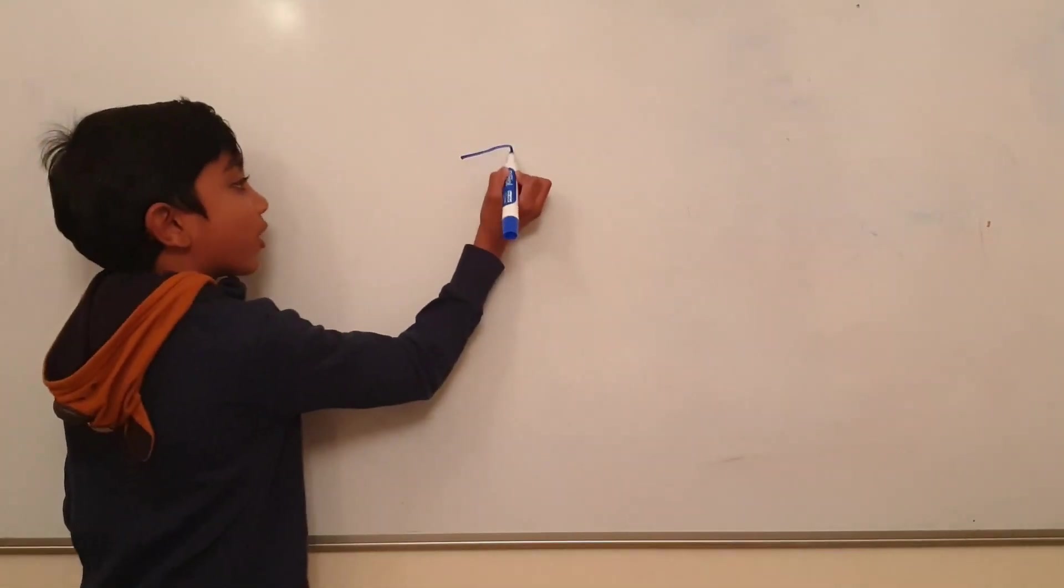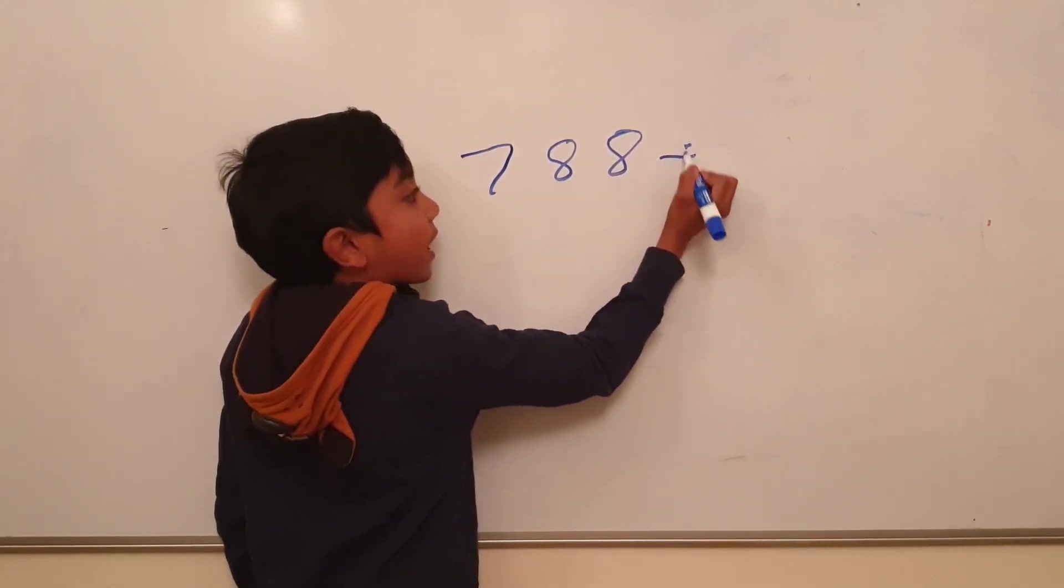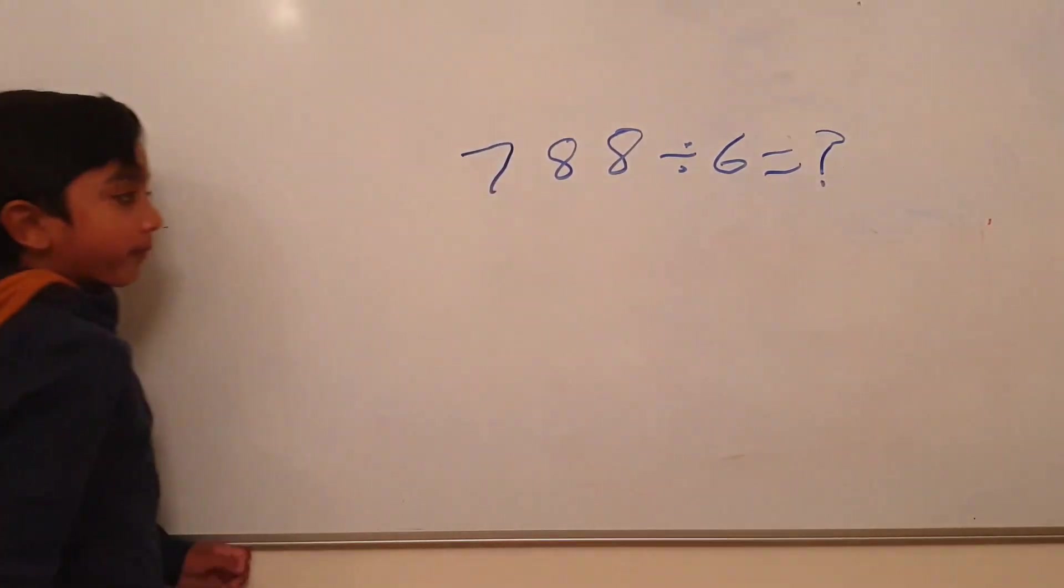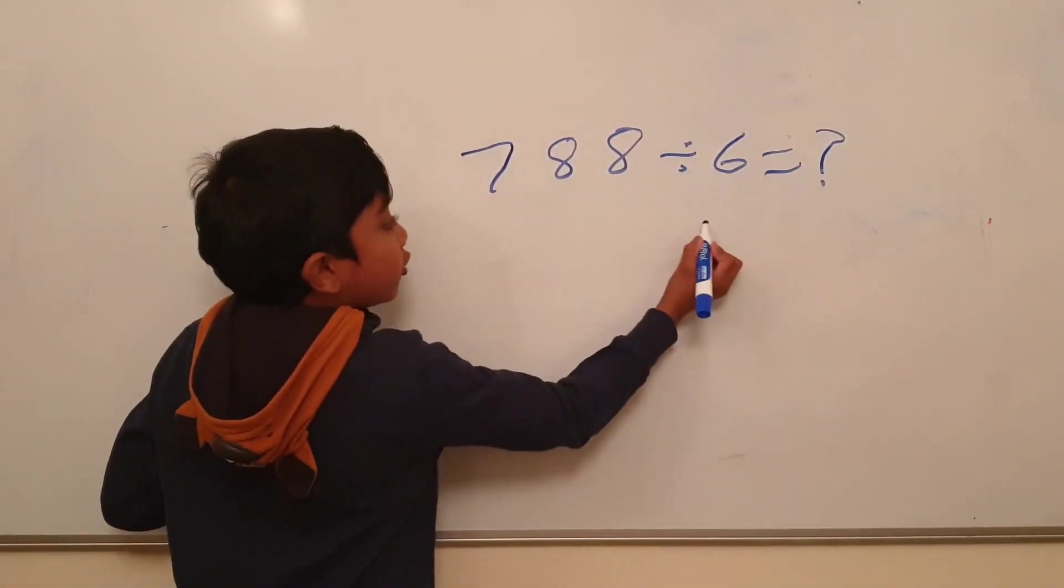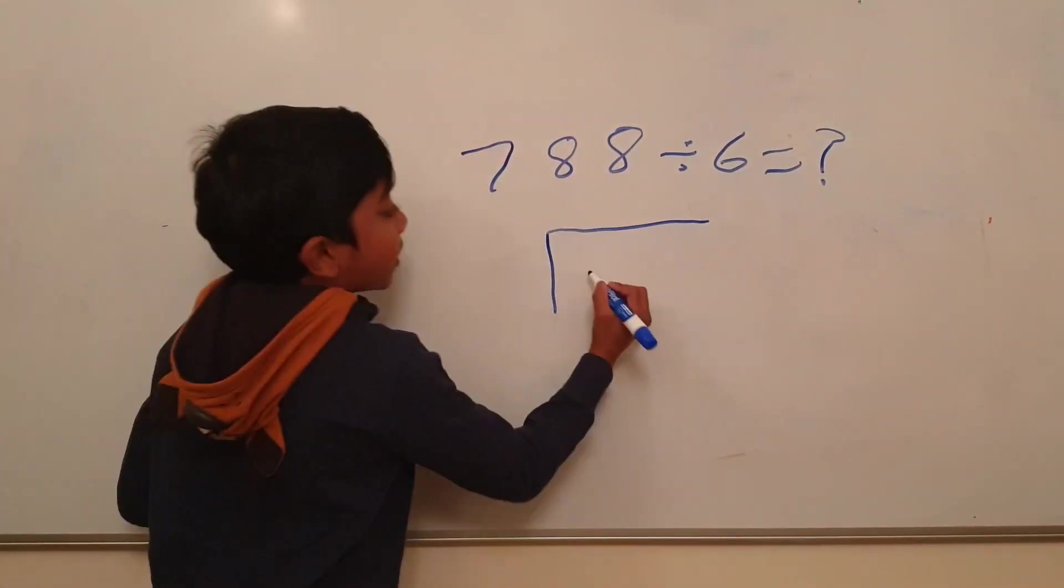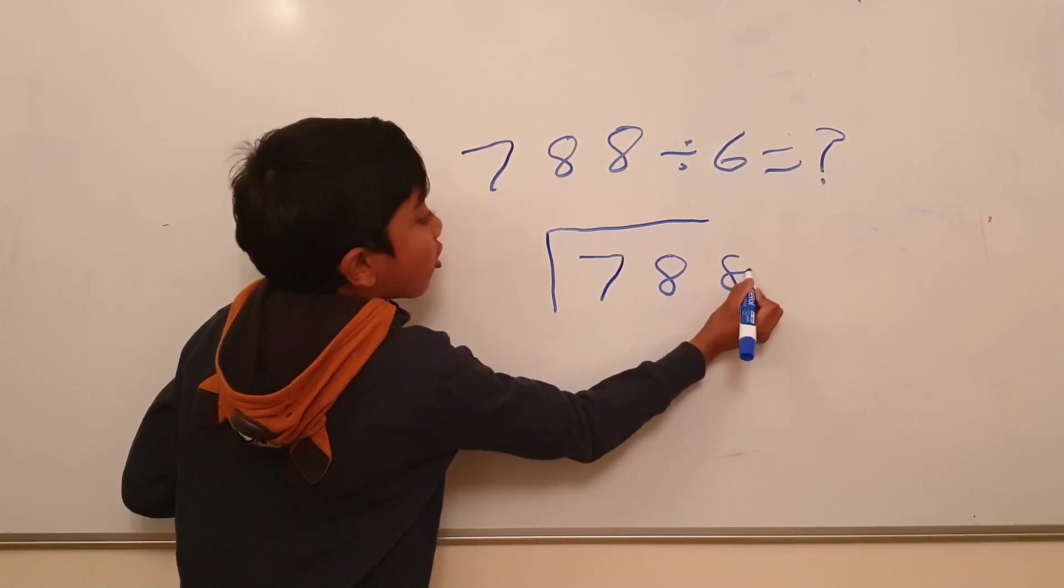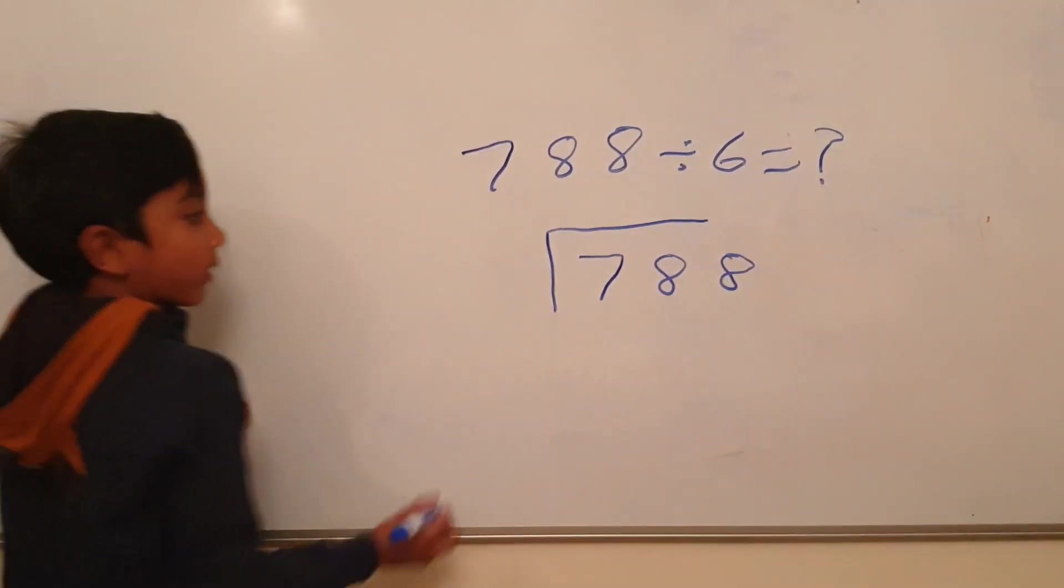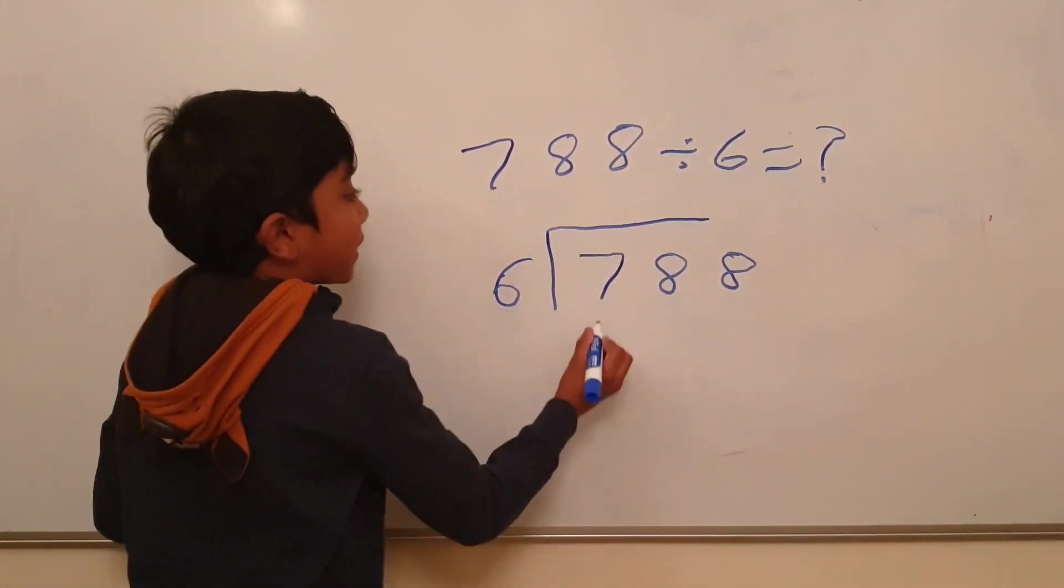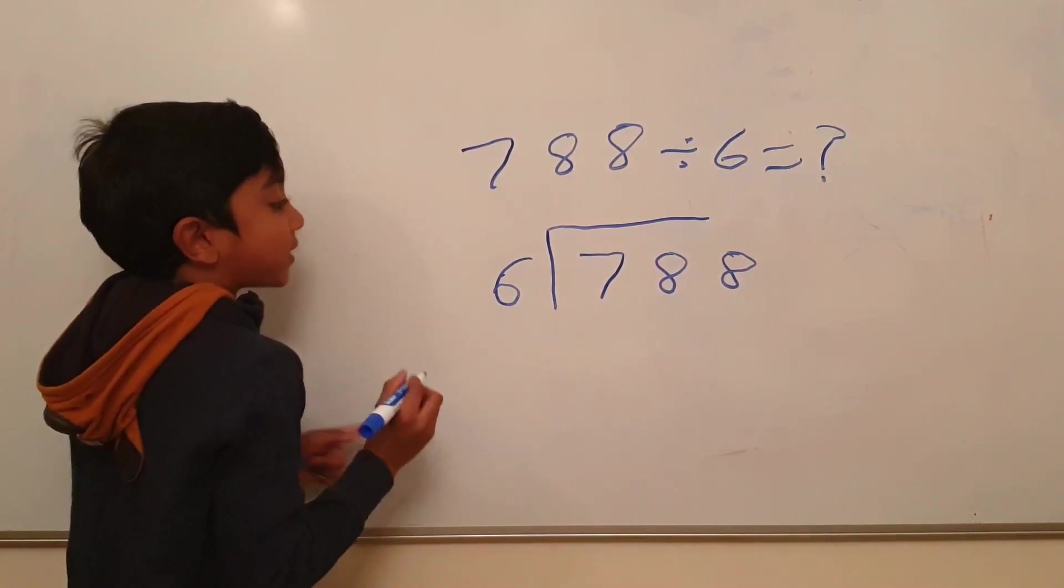788 divided by 6 equals to a mystery. Then we do our bus stop. Place 788 in your bus stop. Now put 6 outside your bus stop. There's 7 people in the bus stop. So I'm going to represent them as 7.